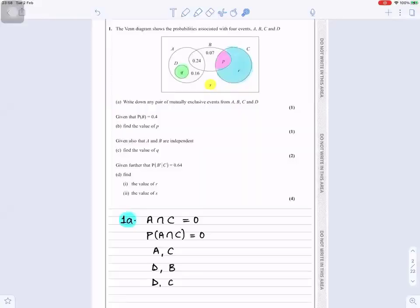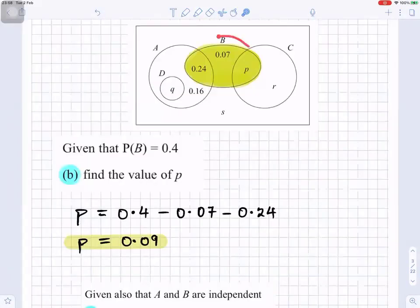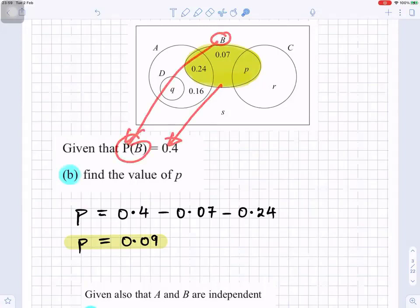Given that probability of B is equal to 0.4, find the value of P. When we look at B, everything inside B there, the total probability is 0.4. So we want to find P. So it would be 0.4 minus 0.07 and minus 0.24. So P would be 0.09.